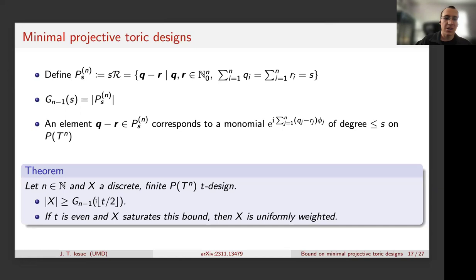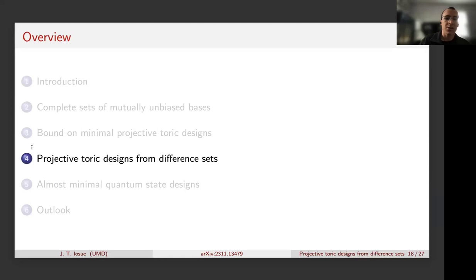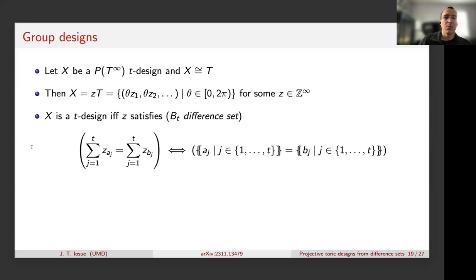We conjecture that this bound is tight for even t — probably not tight for all n, but tight for infinitely many n. We know it's tight for t = 2, which I'll show later. Now I can talk about constructing these toric designs. We'll construct them via different sets, starting with the t = ∞ case.